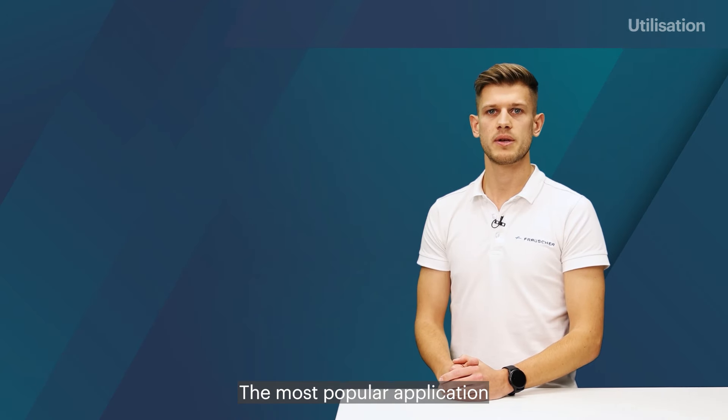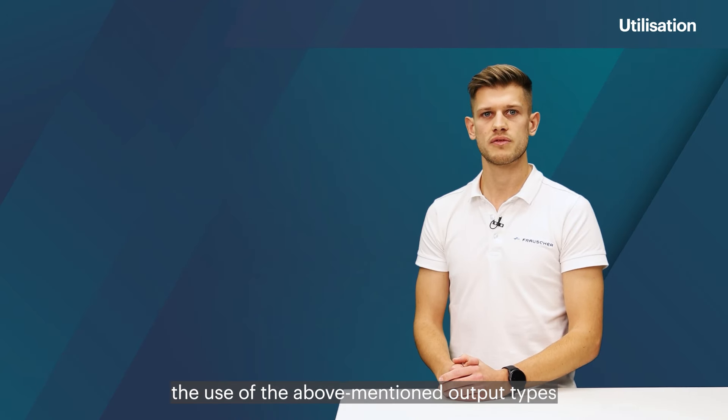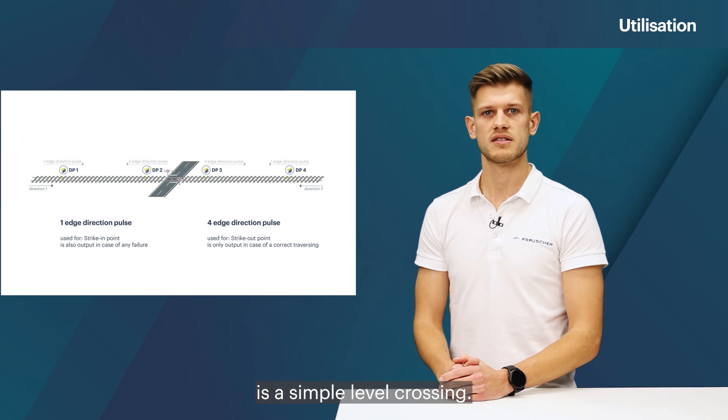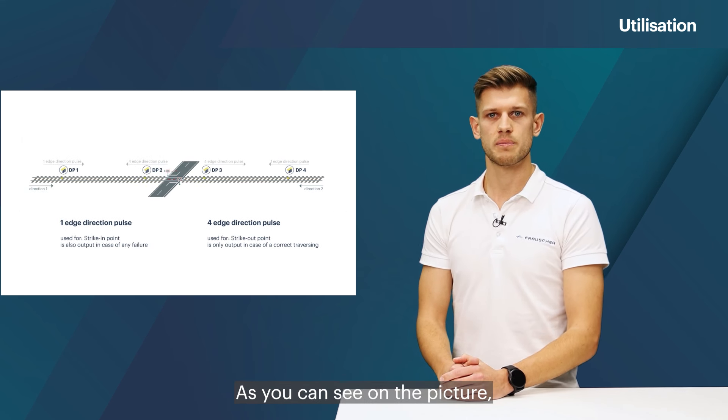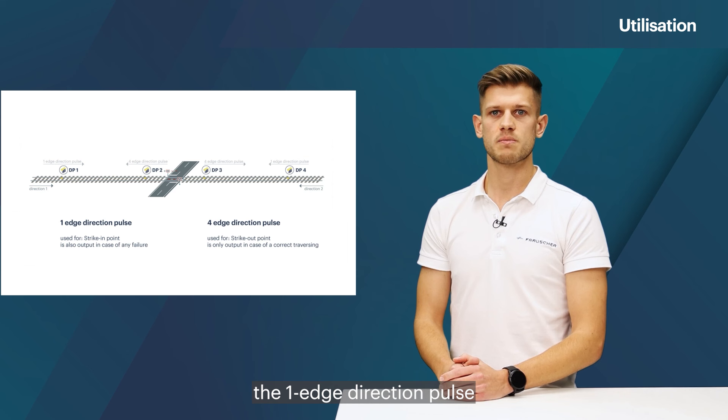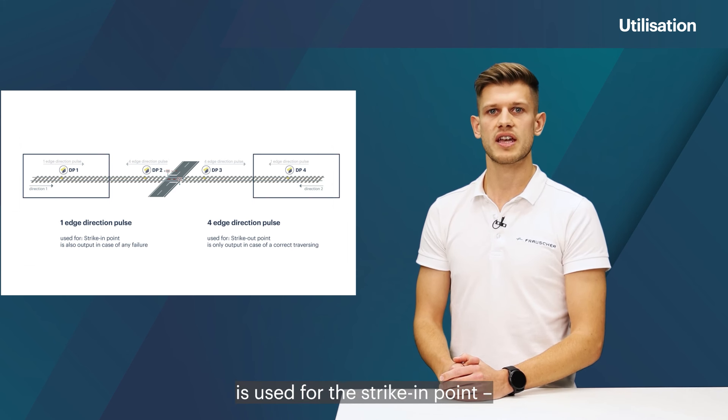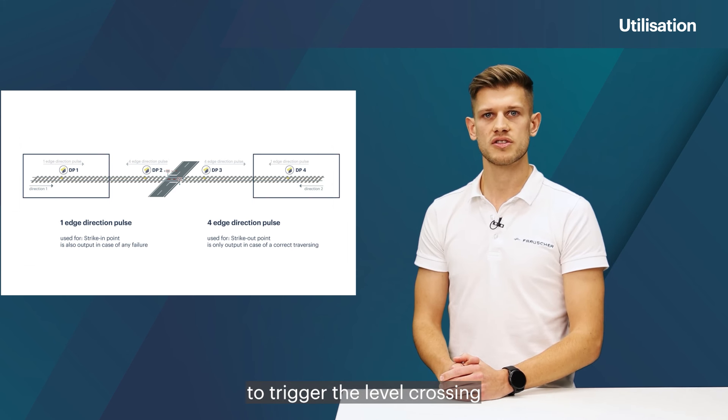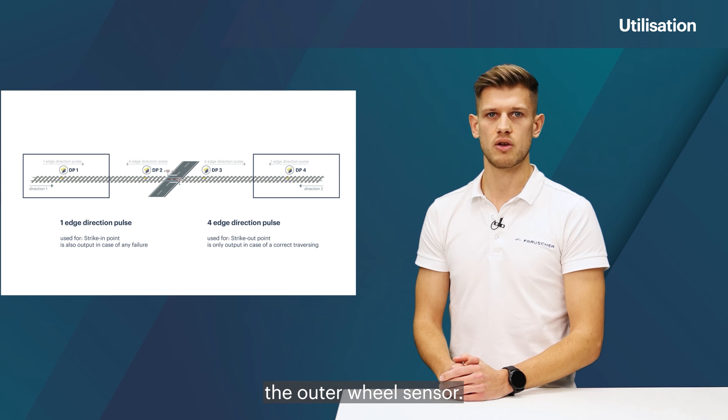The most popular application to illustrate the use of above-mentioned output types is a simple level crossing. As you can see on the picture, the one-edge direction pulse is used for the strike-in point to trigger the level crossing when a train approaches the outer wheel sensor.